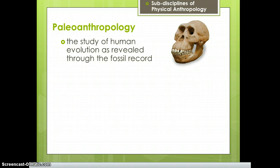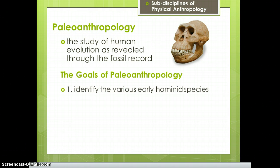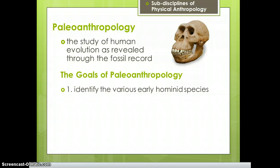Paleoanthropology has three main goals in the pursuit of understanding human origins. The first is to identify the various early hominid species — which is quite challenging. When studying living things, you can observe how groups reproduce to determine species. But when all you have are fossils, it's very difficult to tell what constitutes a species based only on bones.